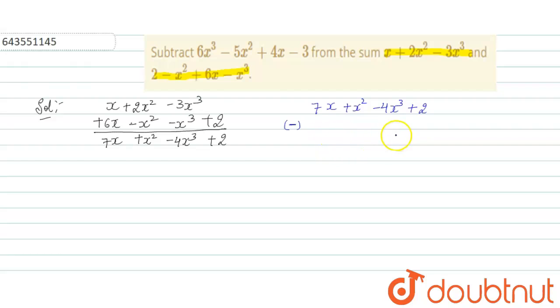We have to subtract 6x³ - 5x² - 3 and +4x. Right? Because we have to subtract, the signs will get changed. So this will turn to minus, this will turn to plus, this will turn to minus and this will turn to plus.